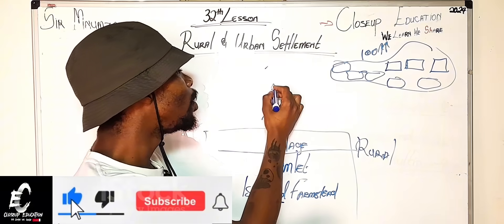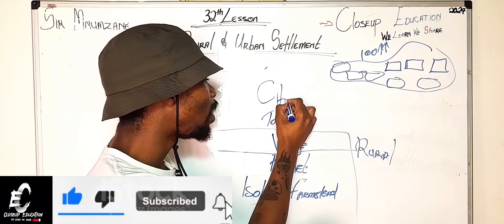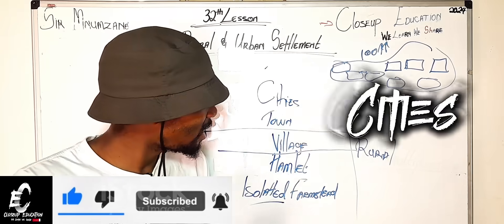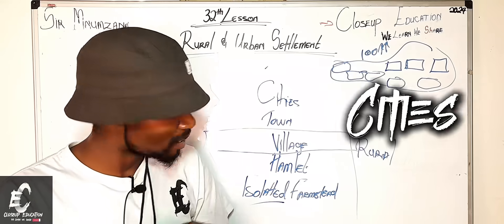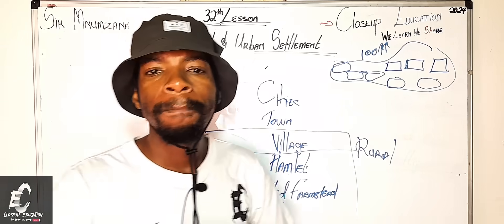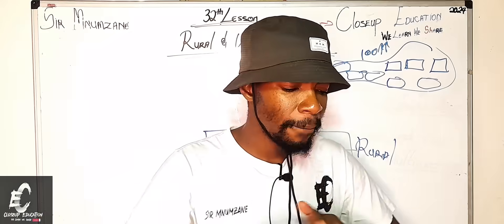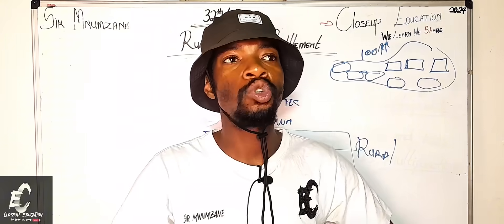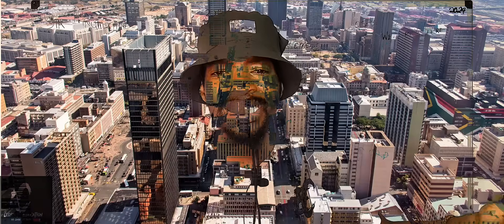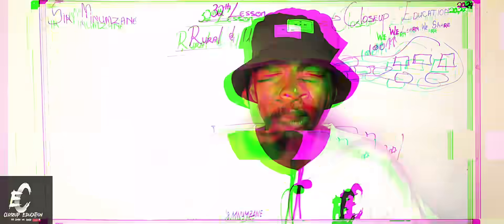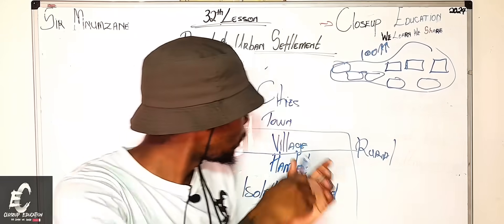And then on top of a town, we start to have city now. These are cities. Now we start to have cities after the town. What is a city, an example of a city? Okay, a city of Johannesburg. Yes, guys, that is definitely a city of Johannesburg. Why a city of Johannesburg? Remember, these are towns.